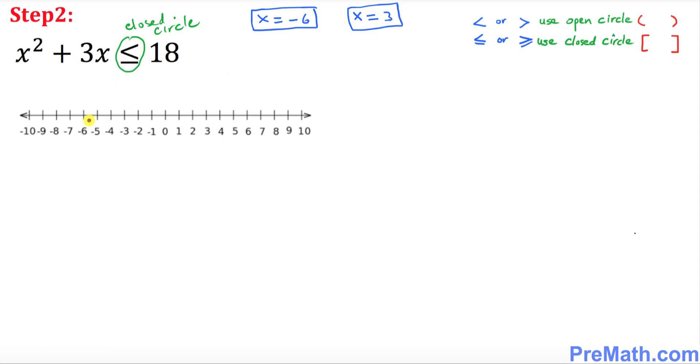So we have a closed circle at negative 6, you can see that one over here. I'm going to put down closed circle at negative 3 and closed circle at 3 as well.